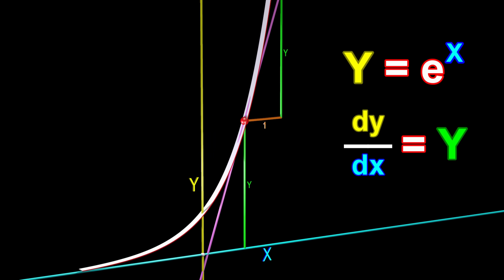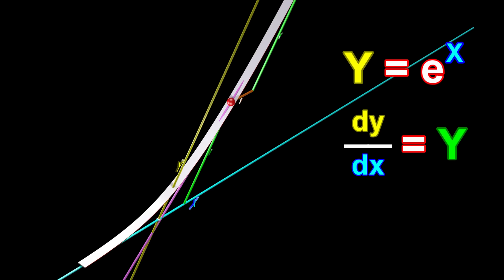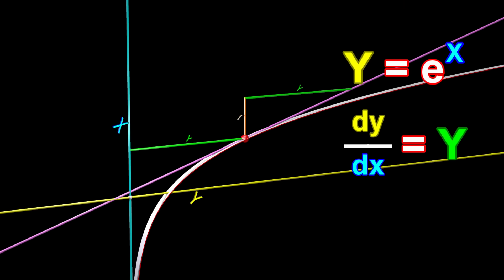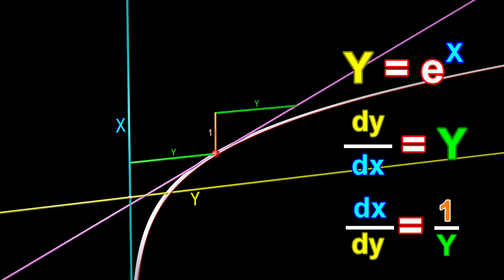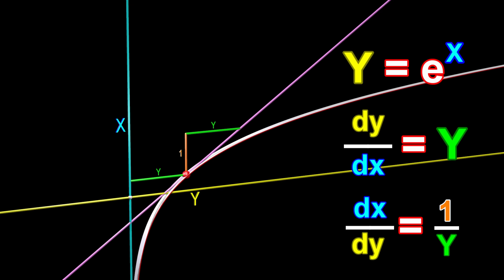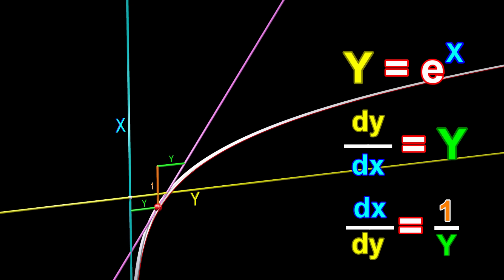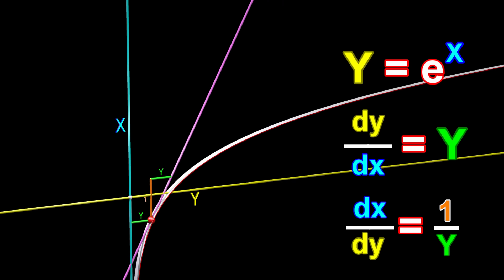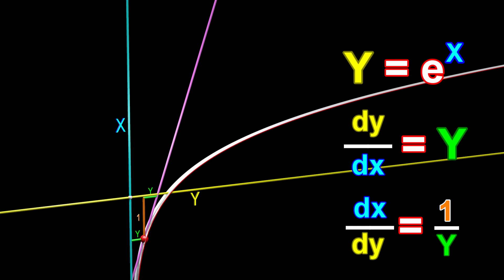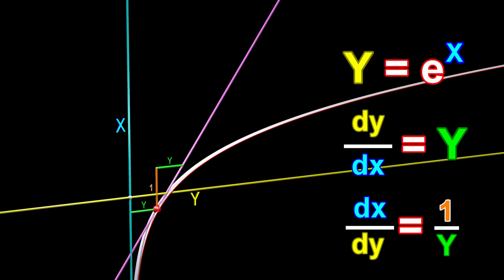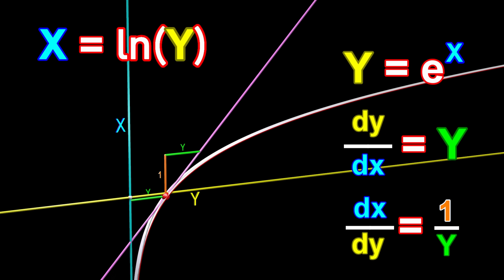Instead of thinking of y as a function of x, let's think of x as a function of y. Another way of saying that y equals e raised to the power of x is to say that x is equal to the natural logarithm of y.